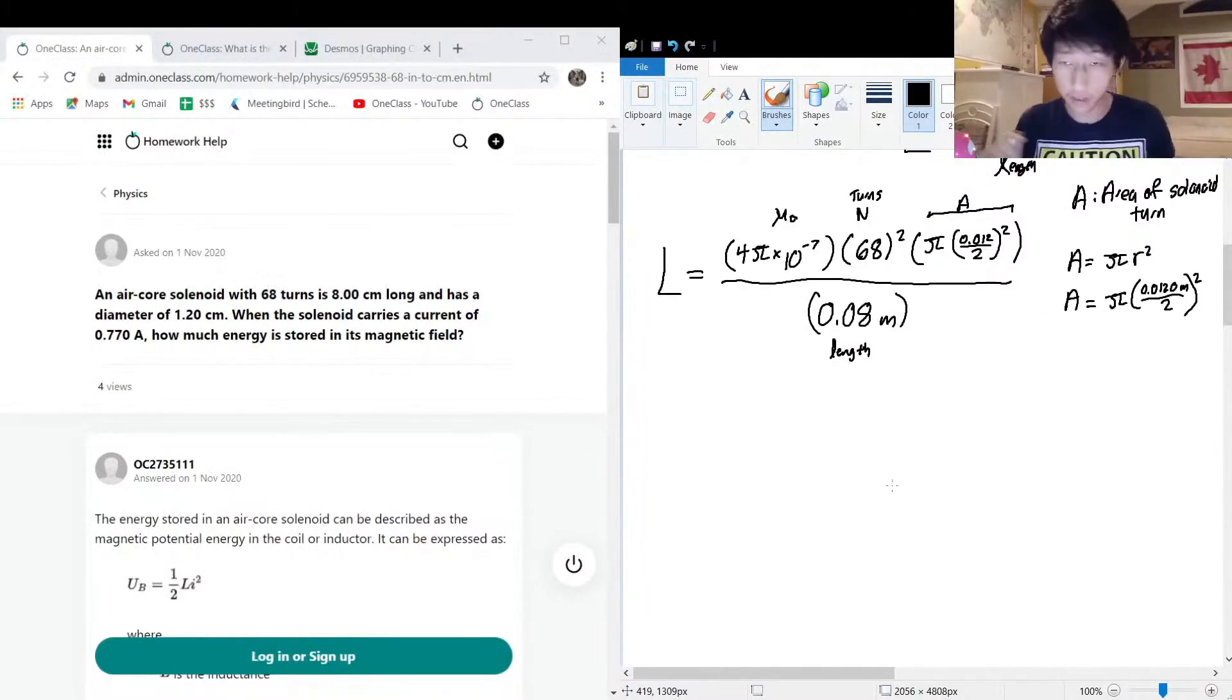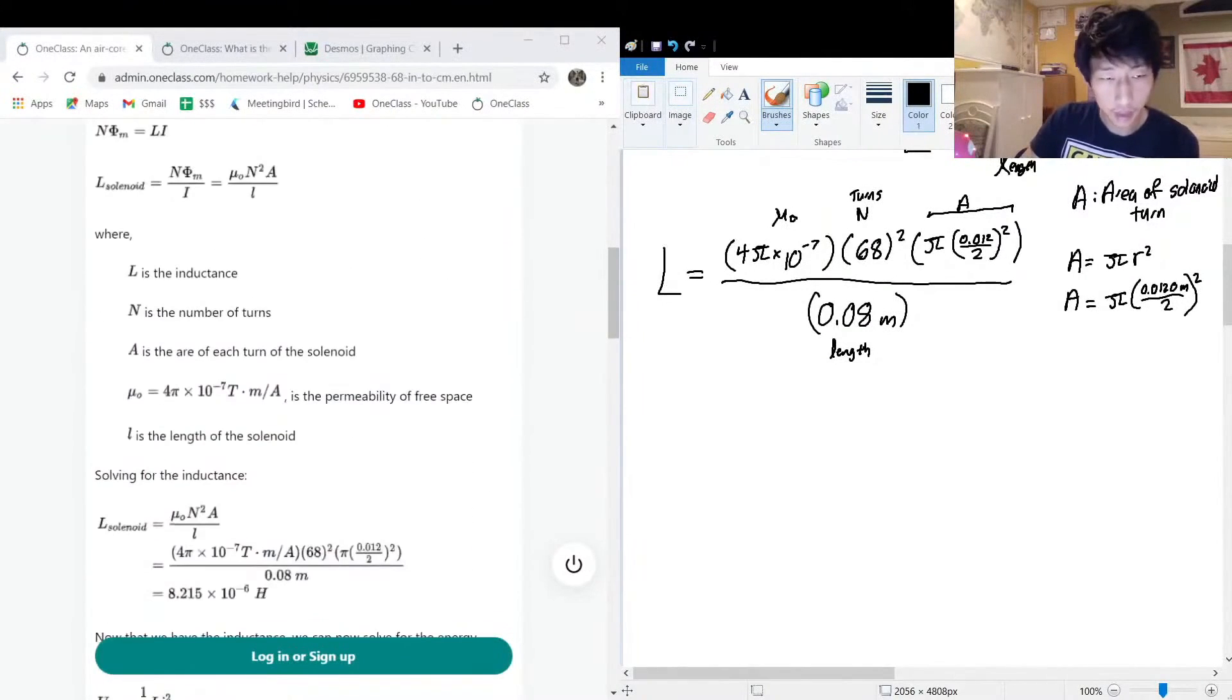And then we multiply it by A, which is just pi times 0.012 over two squared. So this would be A, and that whole thing divided by the length of it, which is eight centimeters. So this is 0.08 meters length. Let's send this to the calculator and figure out what this is. And my value for Henry's was quite small. So L for me is equal to 8.215 times 10 to the negative six Henry.